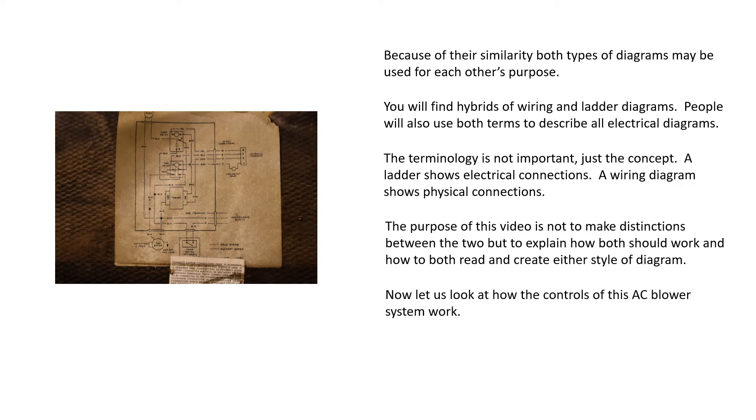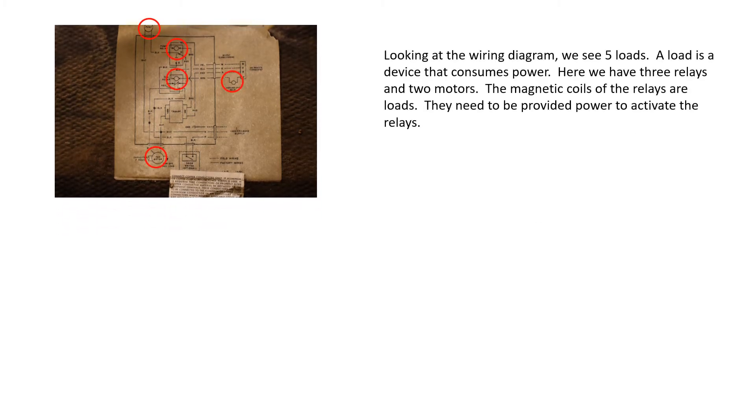Now let us look at how the controls of this AC blower system work. Looking at the wiring diagram, we see five loads. A load is a device that consumes power. Here we have three relays and two motors. The magnetic coils of the relays are loads. They need to be provided power to activate the relays.